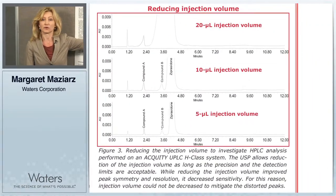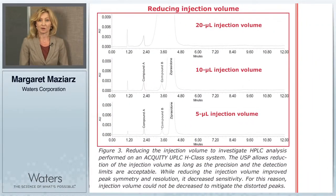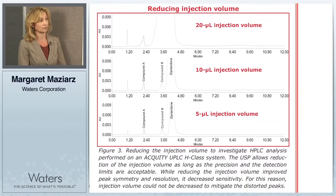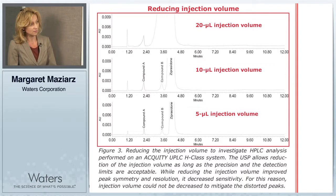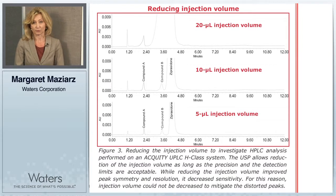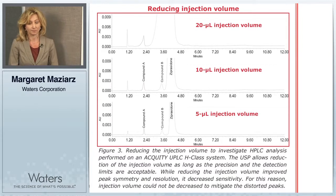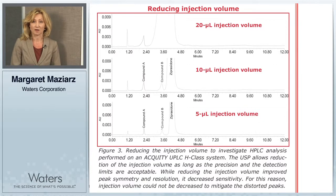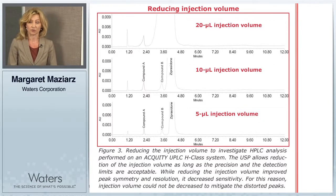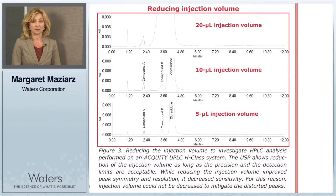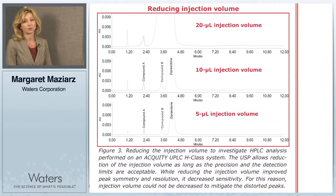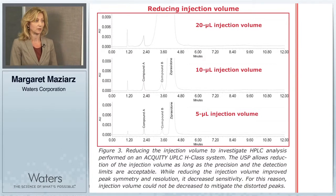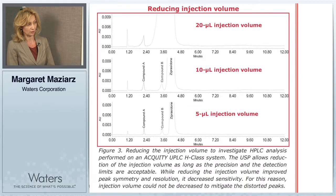As displayed in figure three, we reduced the injection volume from 20 to 10 to 5 microliters. Reducing the volume significantly improved the separation, resolution, and peak symmetry, but it also reduced the sensitivity. USP allows modifications to the injection volume as long as the limit of detection remains acceptable. In this case, however, we couldn't use the reduction of the injection volume to mitigate the peak distortion.